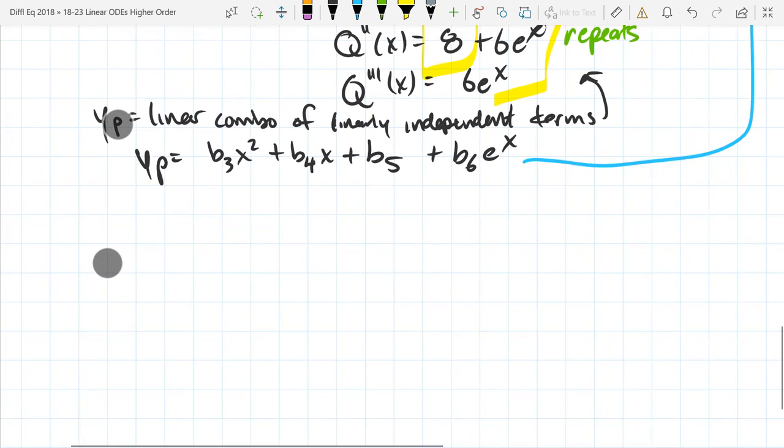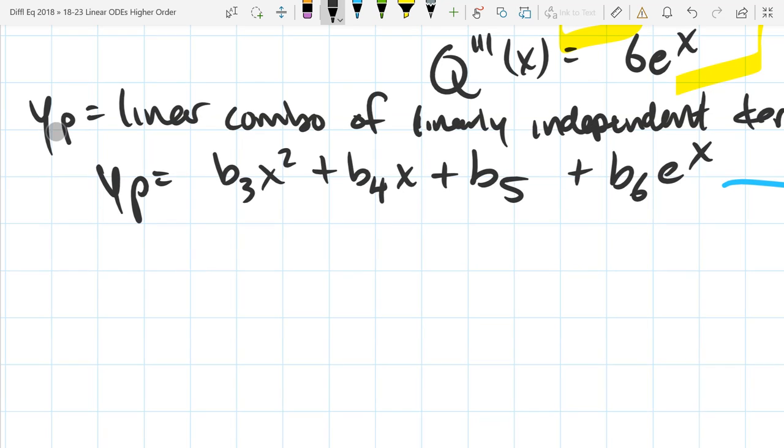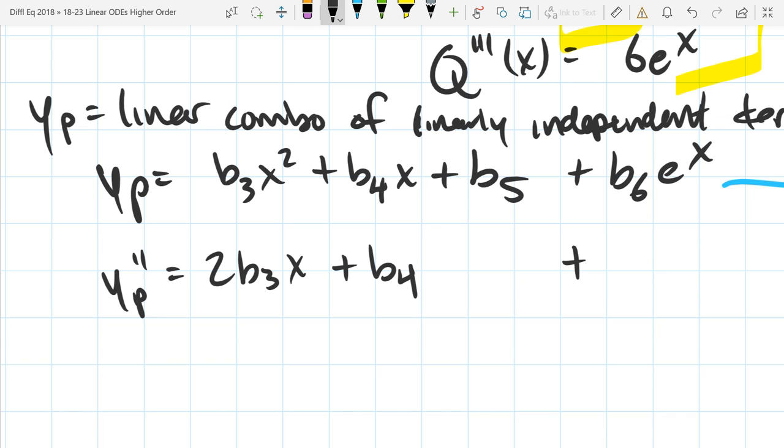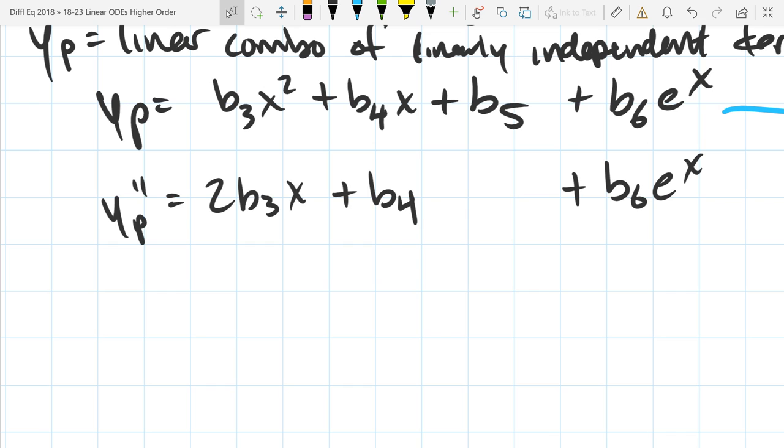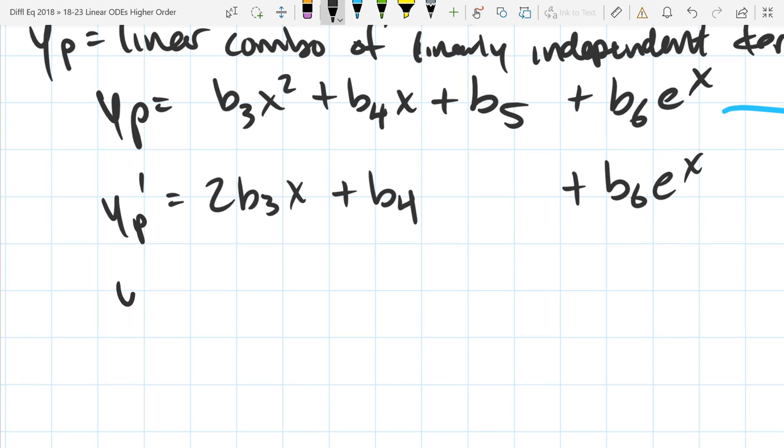Okay. So, let's compute the derivatives here. We got 2B3X to the first plus B4. There is no B5 anymore because the derivative of that is zero plus B6E to the X. So, that's Y, that's single prime, that's double prime. YP double prime is 2B3 plus B6E to the X.